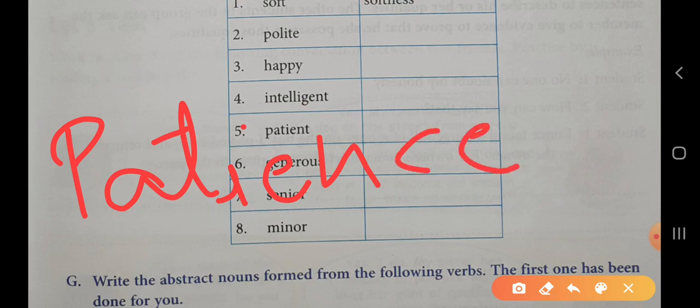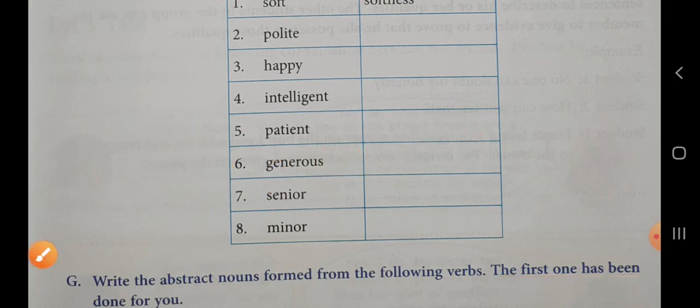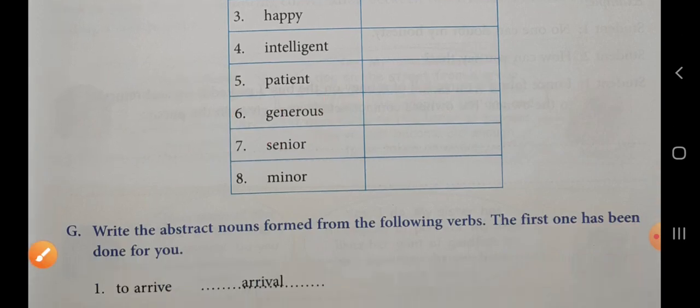Generous. The abstract noun for generous will be generosity. What we will add—look at here: the spelling of generous is G-E-N-E-R-O-U-S. This is the spelling of generous. What should we do now? We